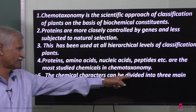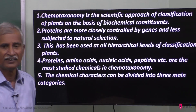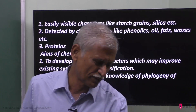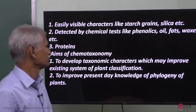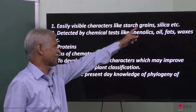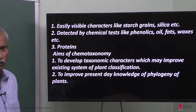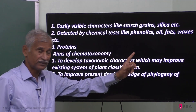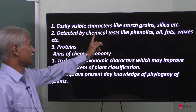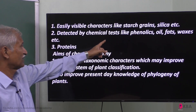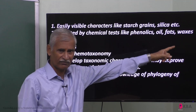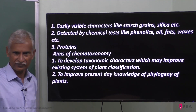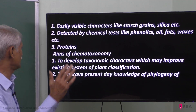The chemical characters can be divided into three main categories. Number one: starch grains and silica — plants are classified upon them. Number two: chemicals detected by tests, like phenols, oils, fats, and waxes — plants are also classified upon them.